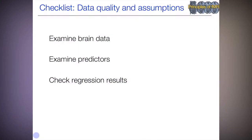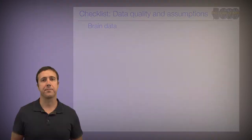Welcome back to Principles of fMRI. In this module, we're going to talk about practical group analysis. We'll look at three things in a basic checklist: we'll examine the brain data, we'll examine predictors, and we'll check the regression results in a relatively straightforward and simple group analysis setting.